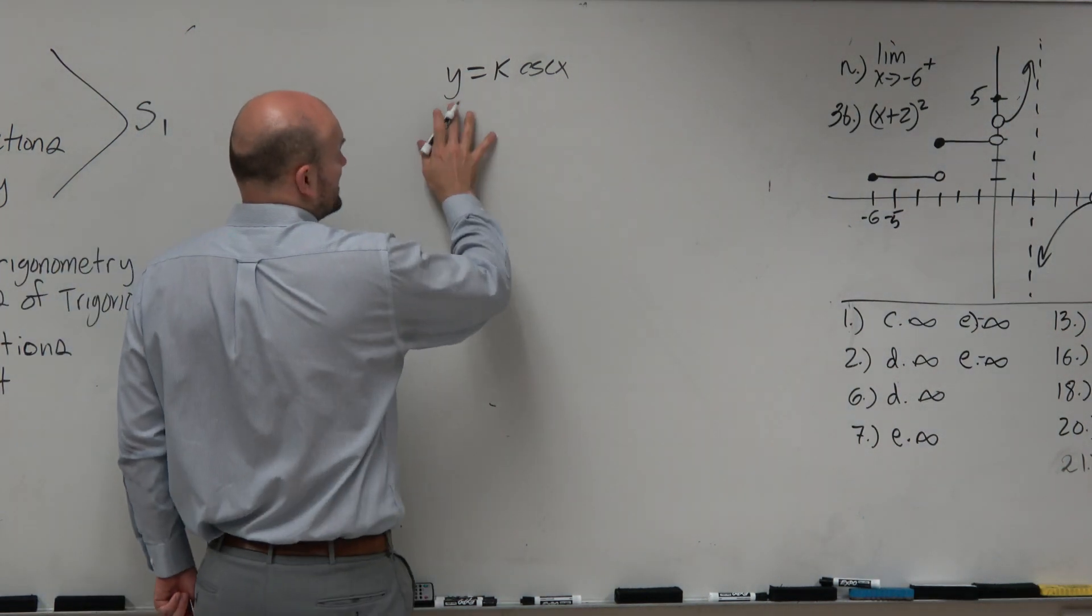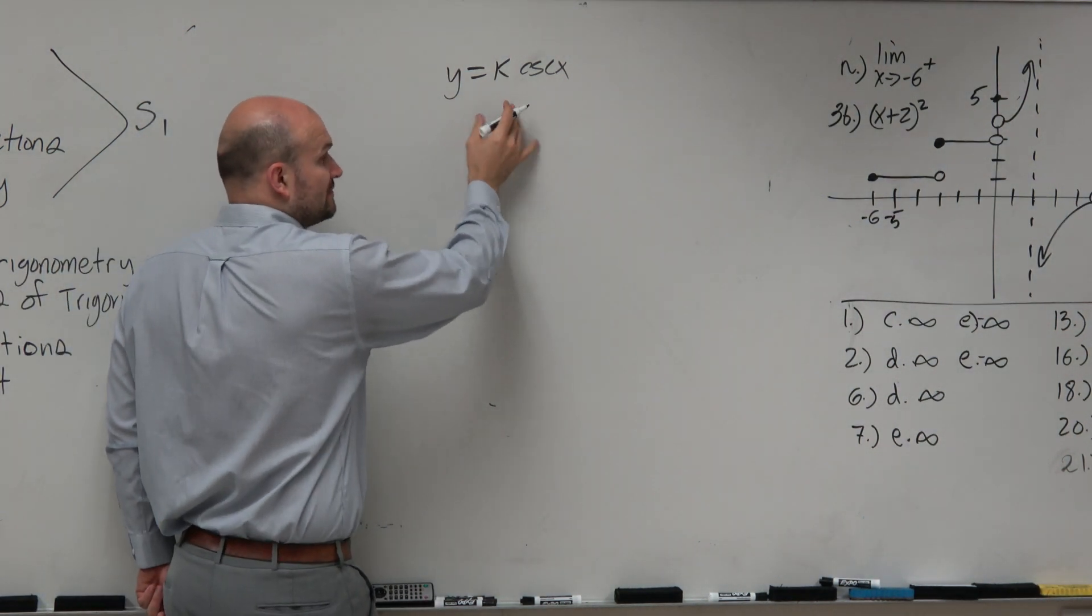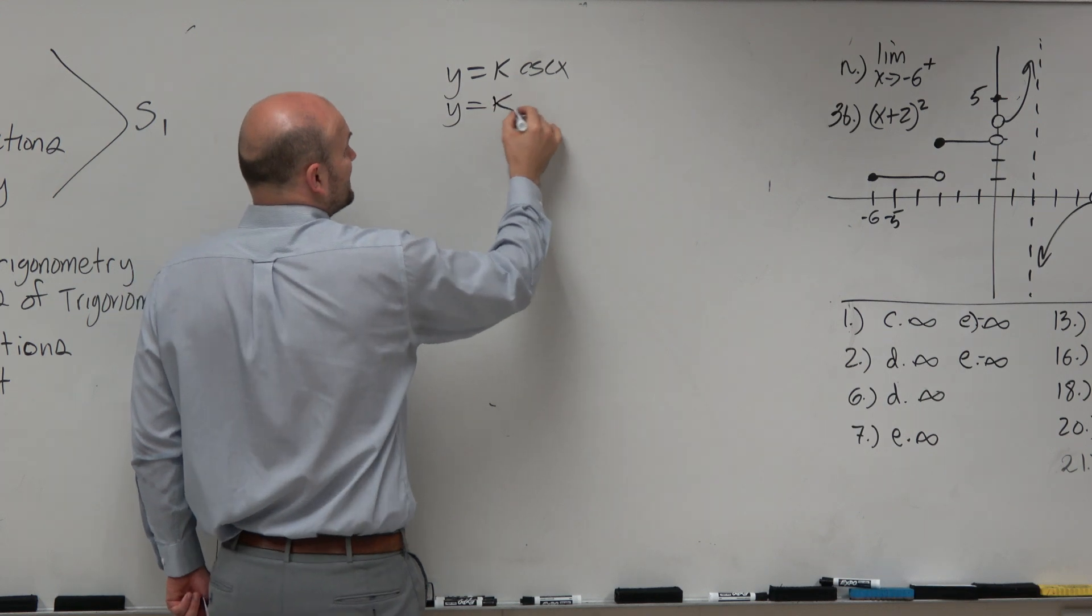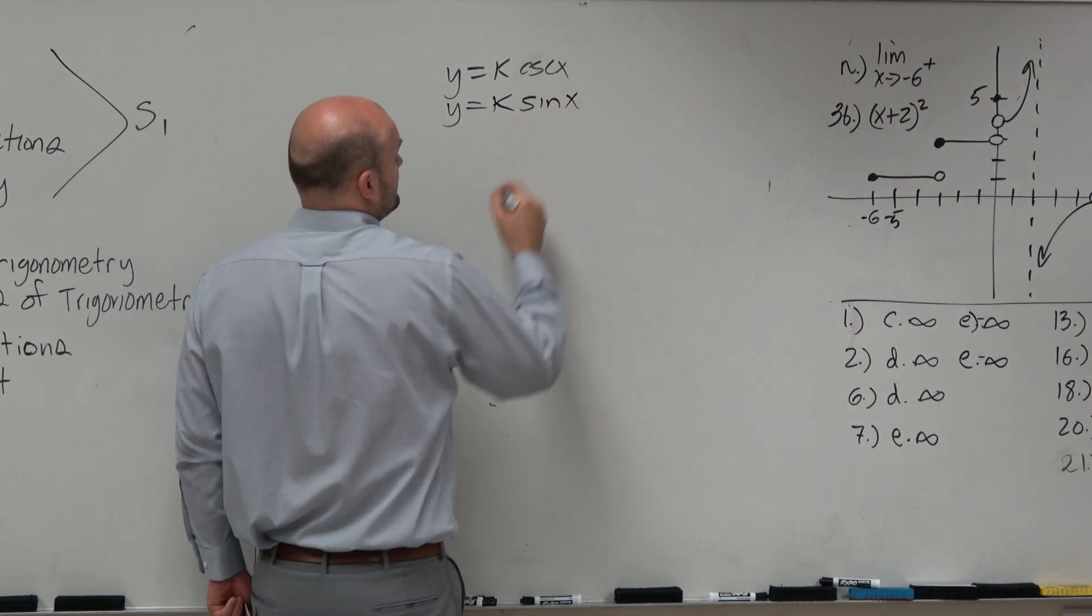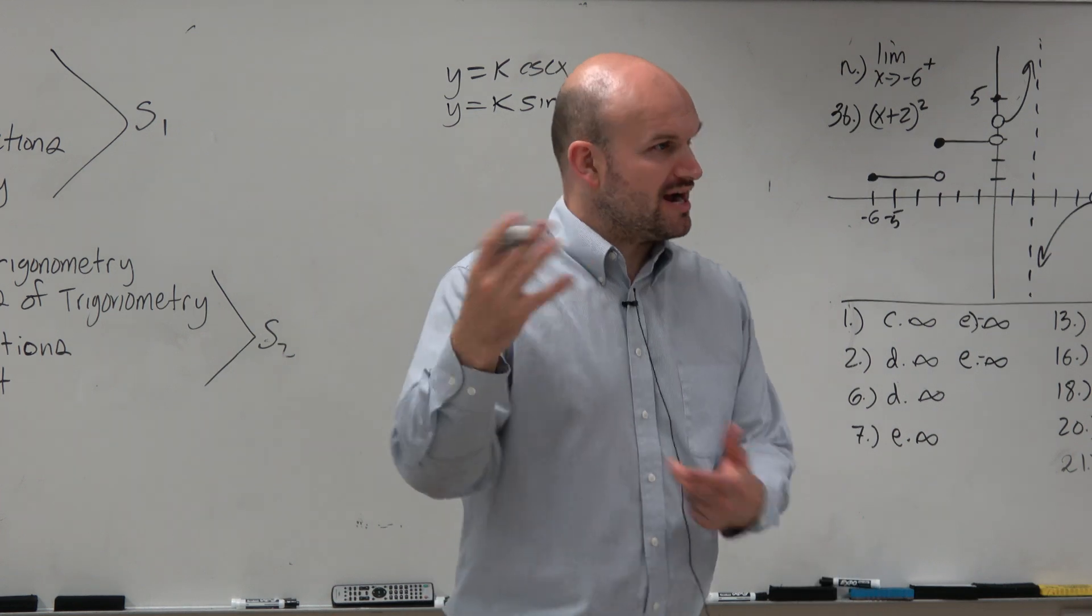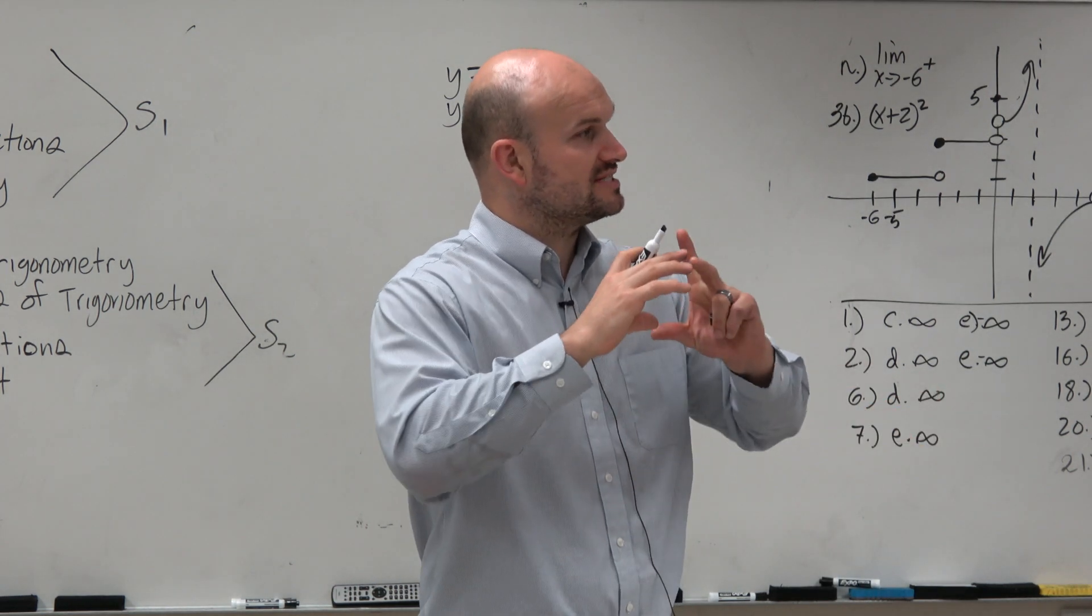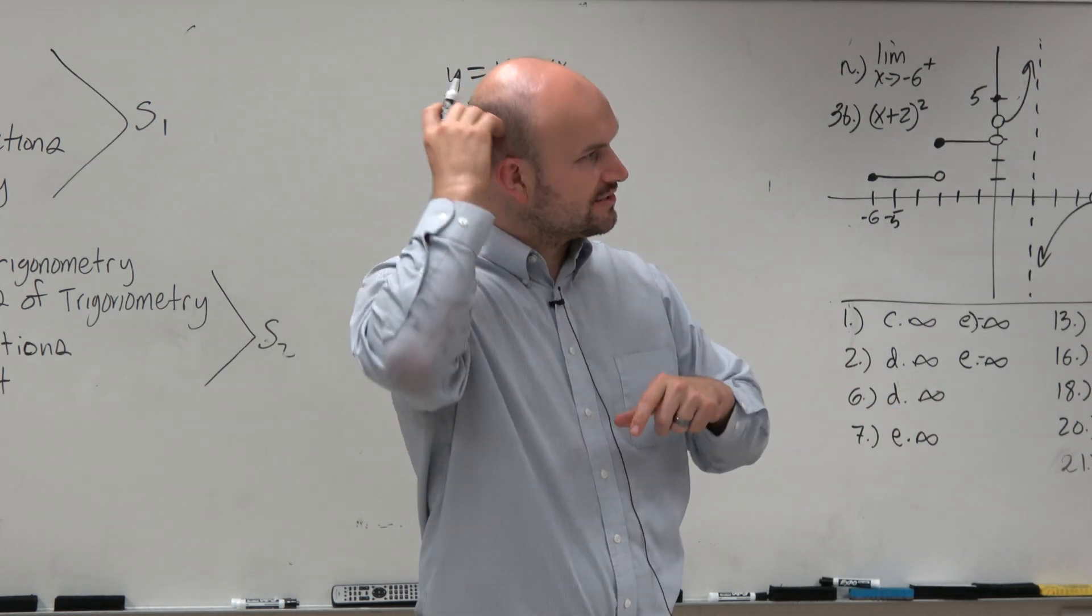So first of all, let's just remember that the reciprocal function of cosecant is sine, right? And remember, the reciprocals have each other. Like, to graph one, you can graph the other. If you know what sine is, you can go from sine and easily graph the other one.